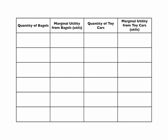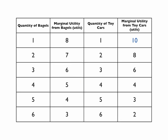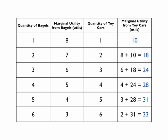This video lesson is on utility maximization. Both bagels and toy cars will be used in this example. As consumers buy the first to the sixth quantities of bagels and toy cars, their marginal utility decreases, while their total utility increases to a total of 33 utils for each good.